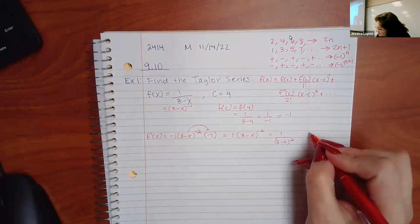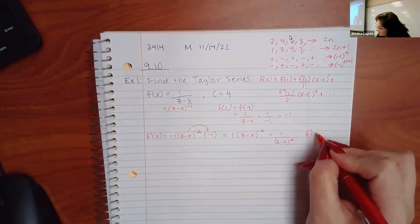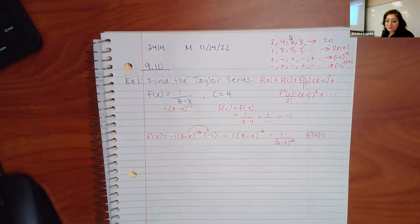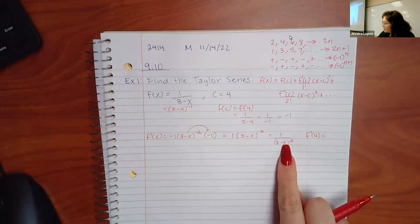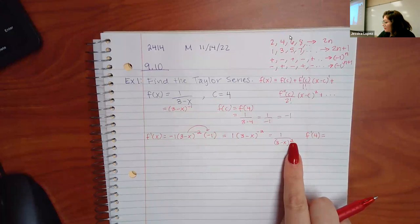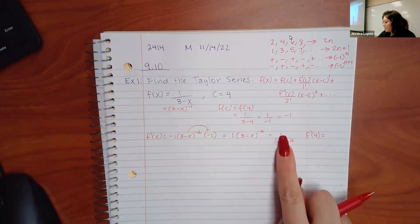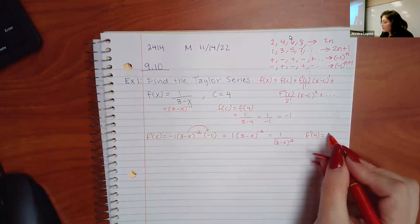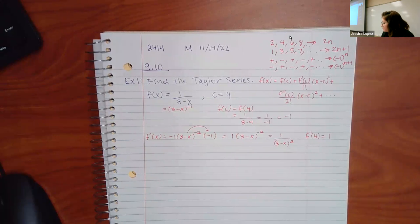Then I find F′(4) by plugging 4 in: I get (3−4)^(−2) which is (−1)^(−2), which is positive 1. So 1 over positive 1 is just 1. You can also use your calculator to get that value.